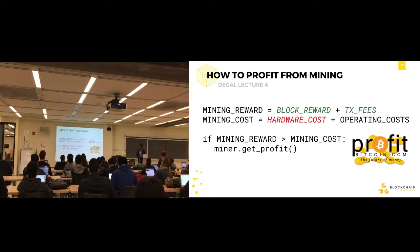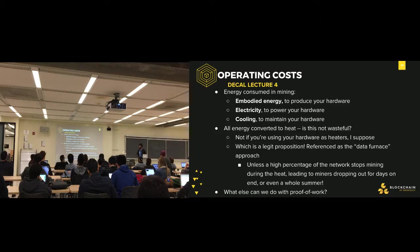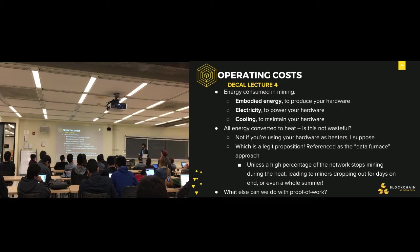After hardware cost, the other cost is the operation cost — using the hardware you bought. Everything comes down to energy: energy used in producing the hardware (embodied energy), energy to power it with electricity, and energy to cool it so it doesn't fry your $3,000 investment. All this energy is ultimately transformed into heat, which many people say is wasteful. So people are trying to come up with alternatives — like the data furnace approach, where you use your hardware as a literal heater, turning your electricity into both money and warmth.